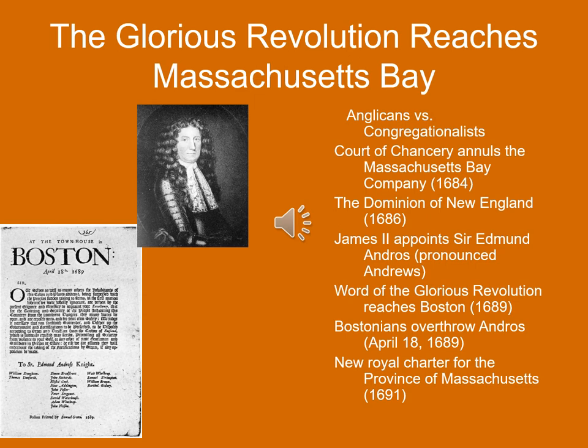The new King William III, rather than punish the Bostonians, granted them a new royal charter for the province of Massachusetts, which it remained all the way until the time of the American Revolution. This is how the Bostonians reacted to the Glorious Revolution: if King William and Queen Mary could overthrow their despot, King James II, the Bostonians could certainly overthrow their despot, Sir Edmund Andros. You can see an image of Andros and a statement from April 18, 1689 basically telling him to resign or they were going to come for him — which in fact they did.